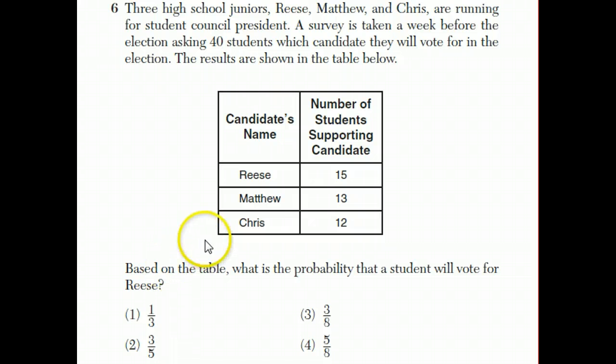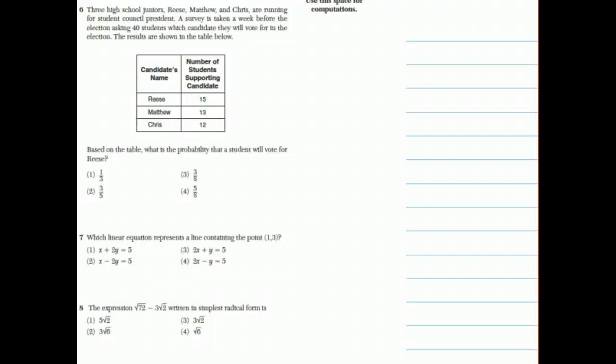A better way of saying this question would be that if they pick one of these 40 students at random, what is the probability that they will be voting for Reese? Well, there are 40 students, and of those students, 15 of them are going to vote for Reese. So that means that 15 out of the possible 40 people are voting for Reese, and that will also be the probability if you select somebody at random that they'll vote for Reese. If you reduce this fraction by dividing top and bottom by 5, you'll get 3 eighths, which is the answer to this question. Choice 3.